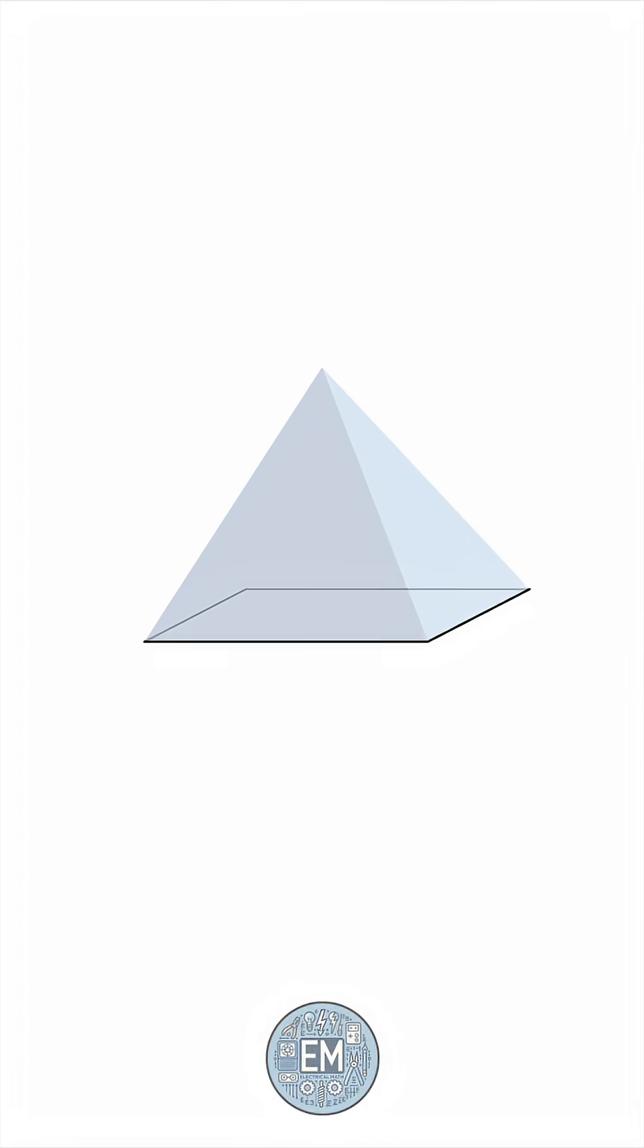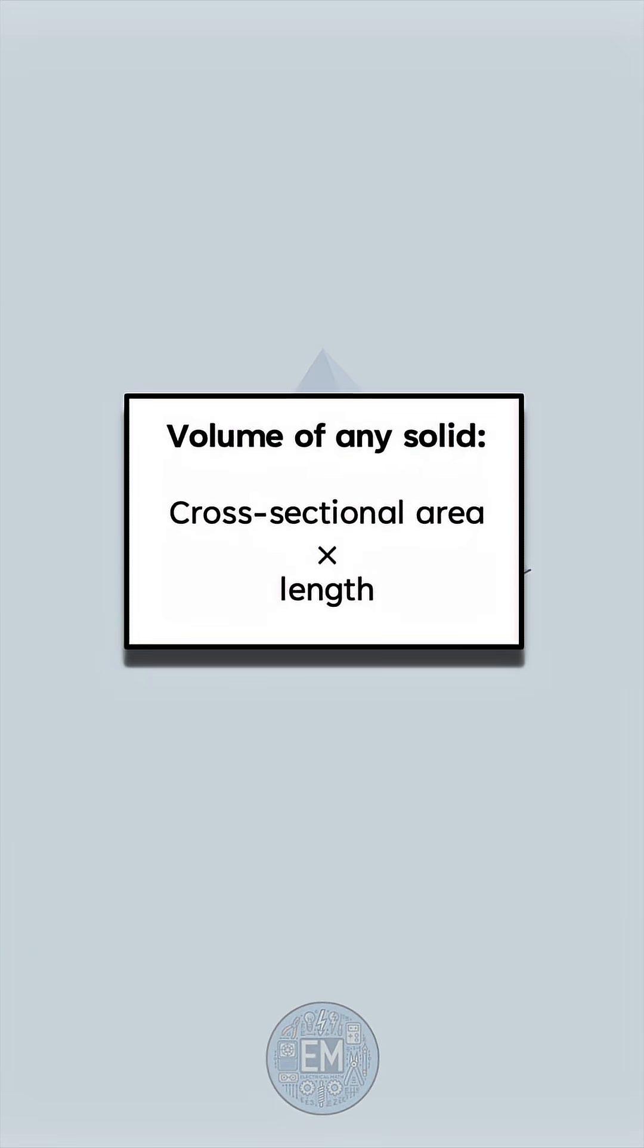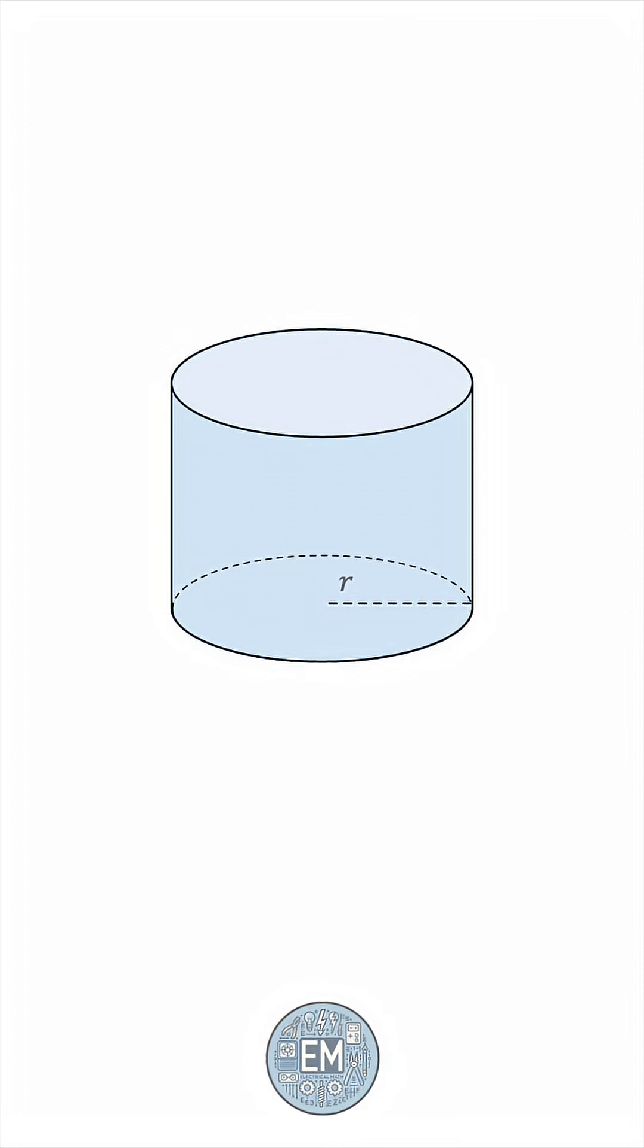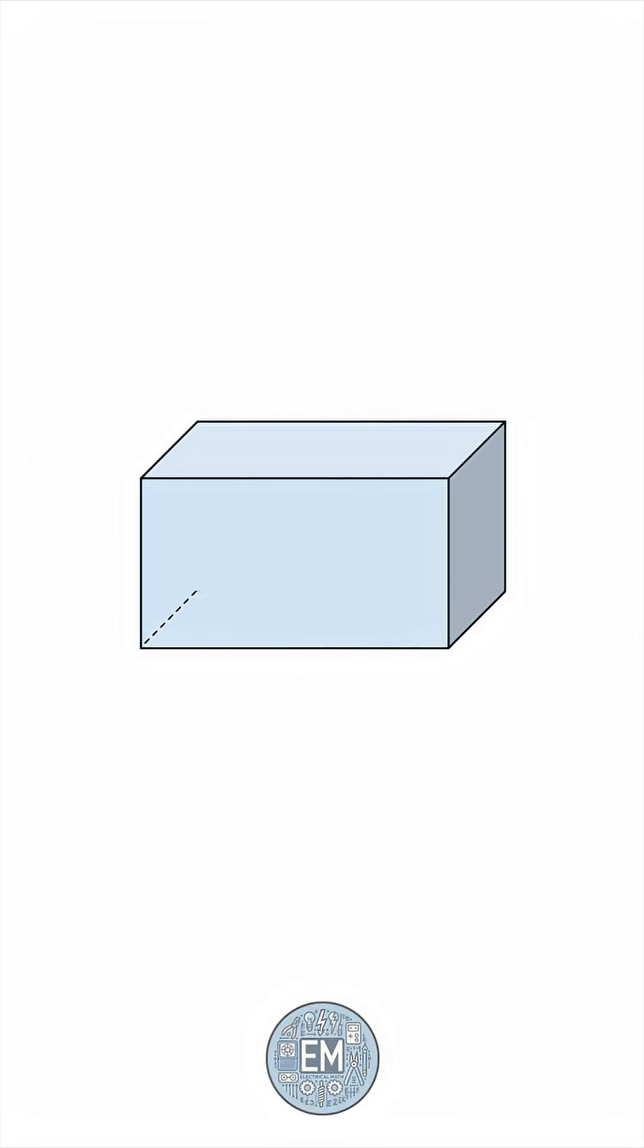In general, the volume of a solid is its cross-sectional area times length. So, for example, if we have a cylinder, the cross-section is a circle, so the volume is pi r squared h. If we have a rectangular box, the cross-section is a rectangle, so the volume is length times width times height.